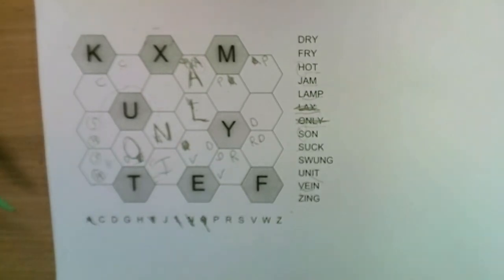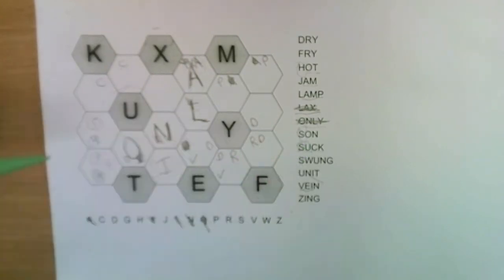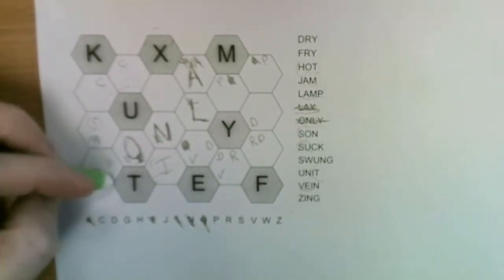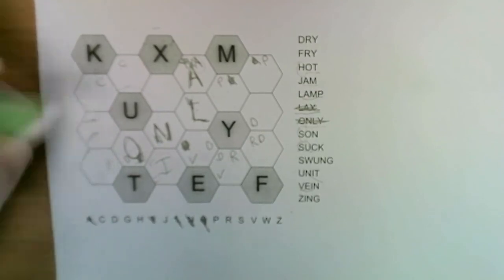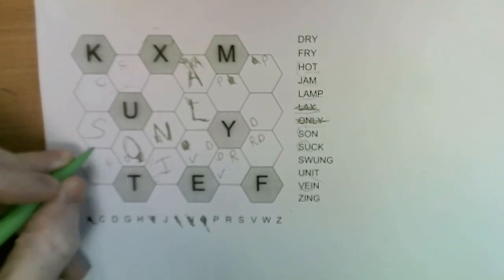We have sun and suck. We can resolve this straight away. The S neighbors the U. Well this S doesn't neighbor any U, so that means this has to be the S and since we know that was the S, this had to be the H.